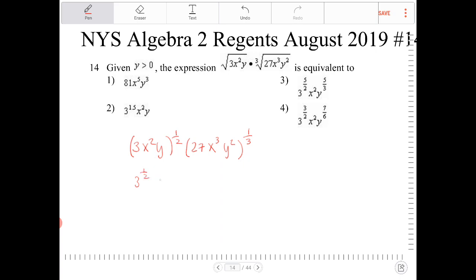That one half will then be distributed to all the powers, to all the individual terms that are being multiplied. So it's 3 to the one half, x squared to the one half, and then y to the one half. And I'm going to get rid of the parentheses here. And same thing with 27 to the one third, x to the three times one third, and then y squared times one third there.